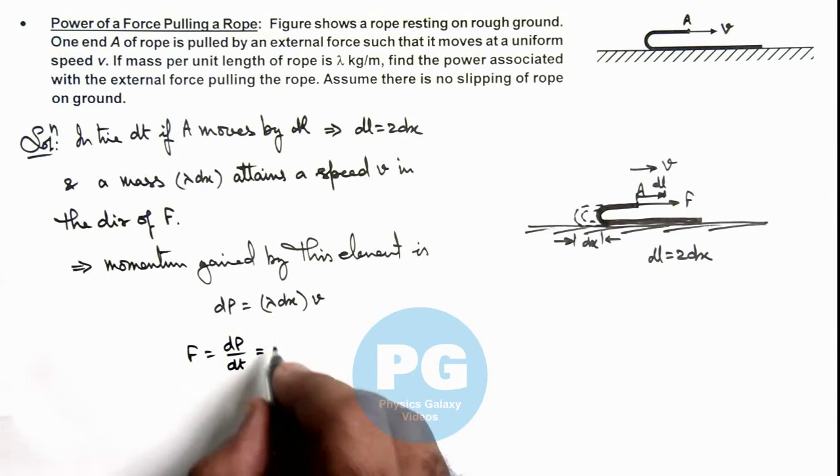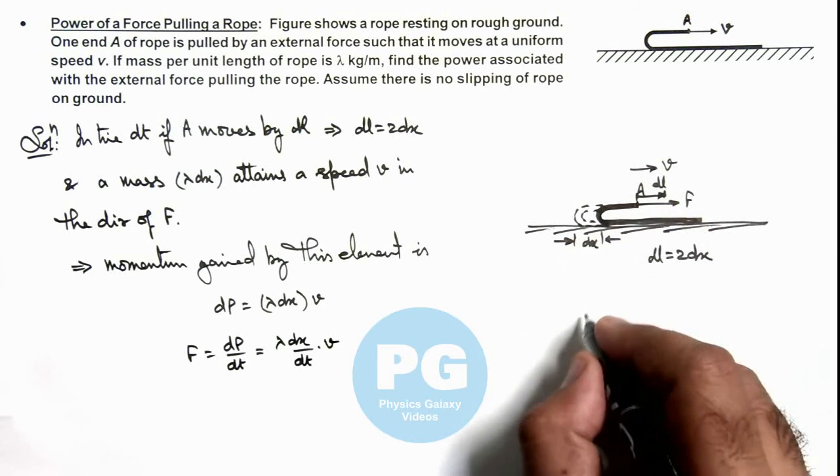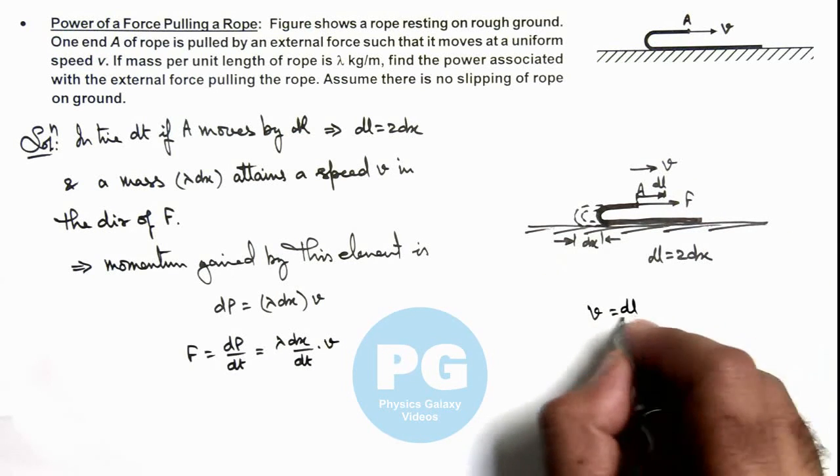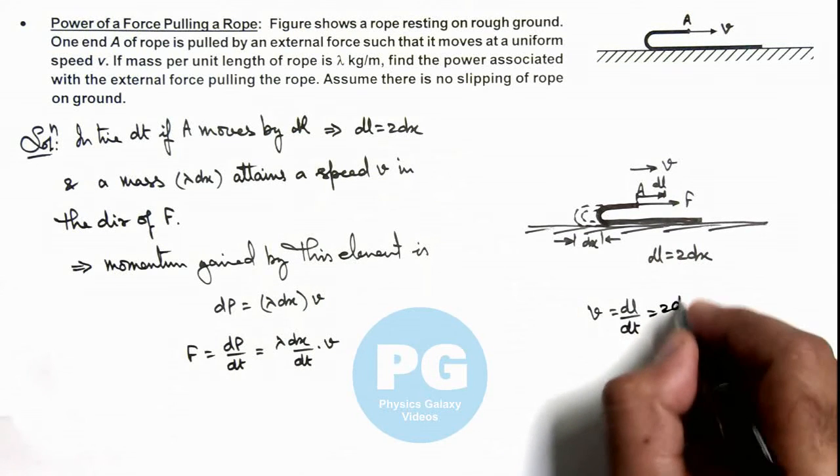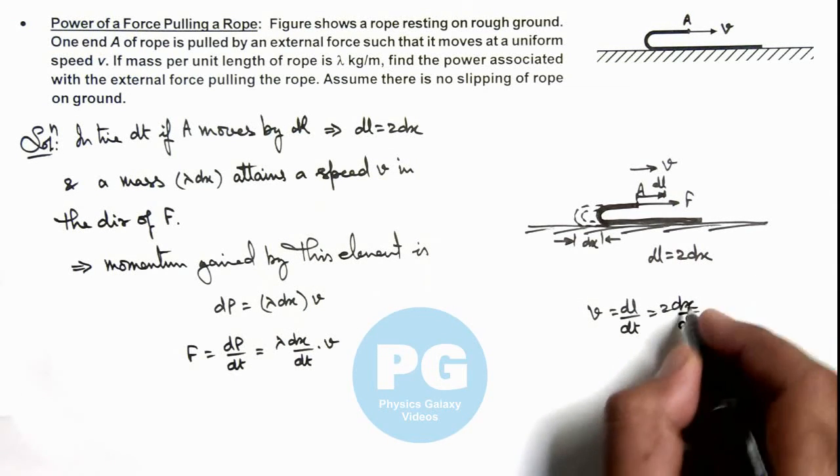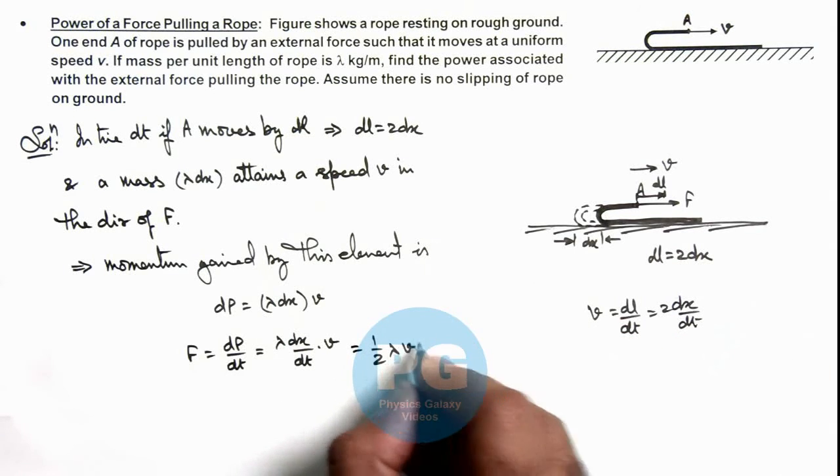So in this situation, this will be λ(dx/dt) multiplied by v. And here we can write v as dl/dt, and the value of dl is 2dx, so this will be 2dx/dt. So the value of dx/dt we can substitute as v/2, so this is half λv².